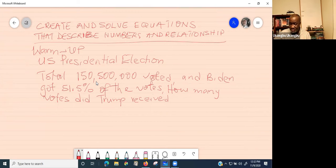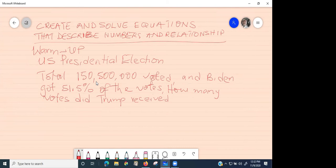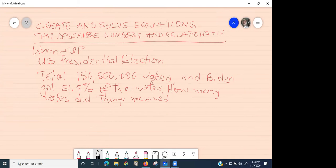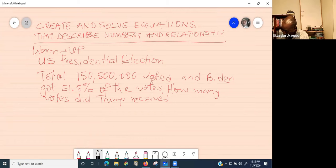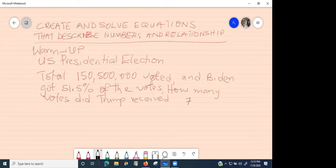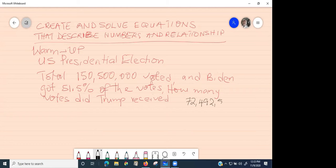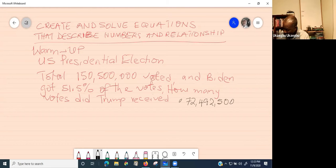Who got the solution? Autumn Gill. What's the number of votes that Trump received? I got $72,492,500. I just wrote what you said. I'm not saying you are right or wrong.